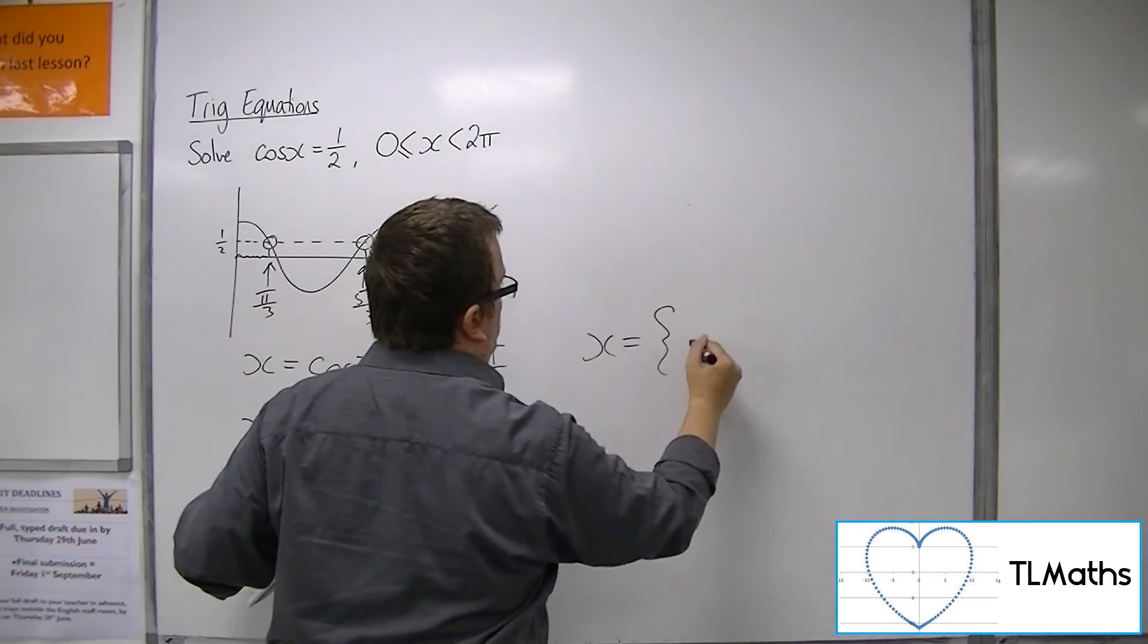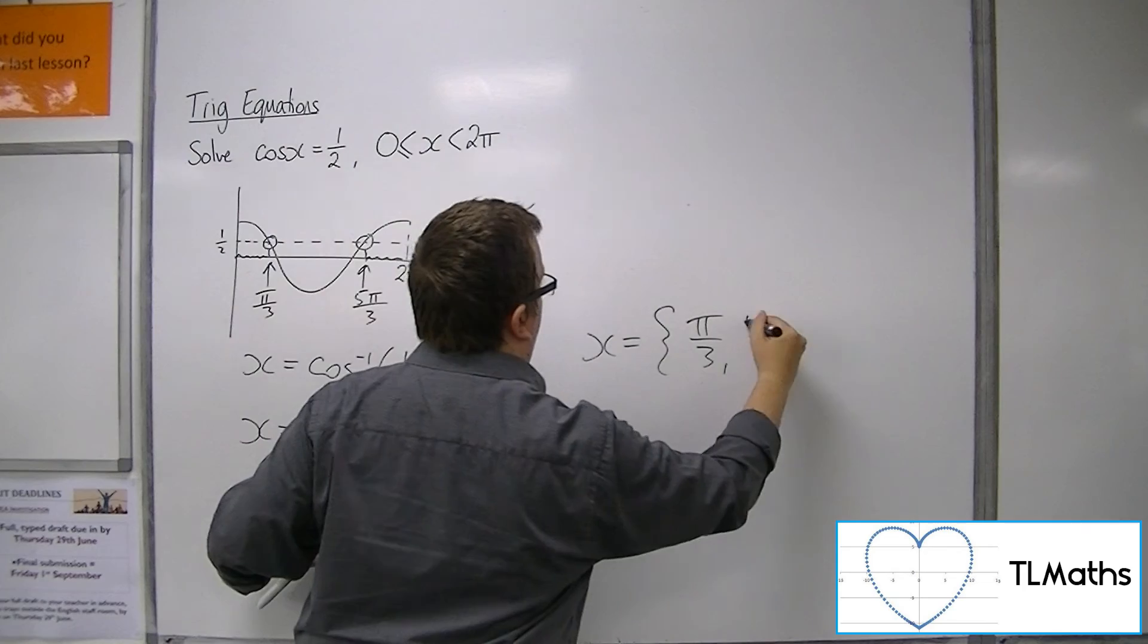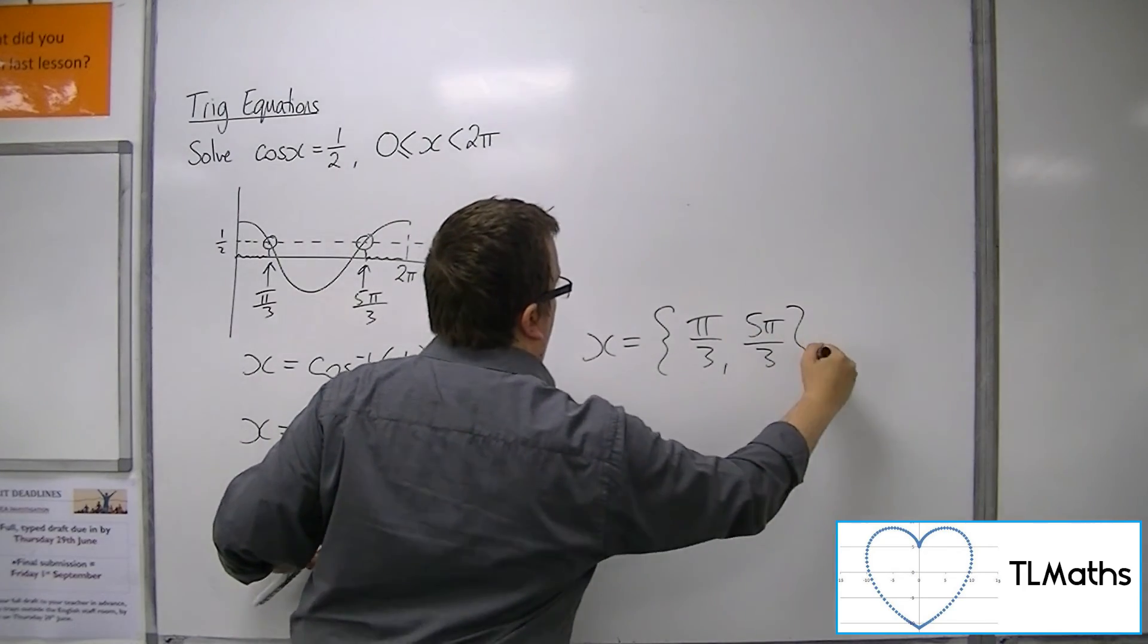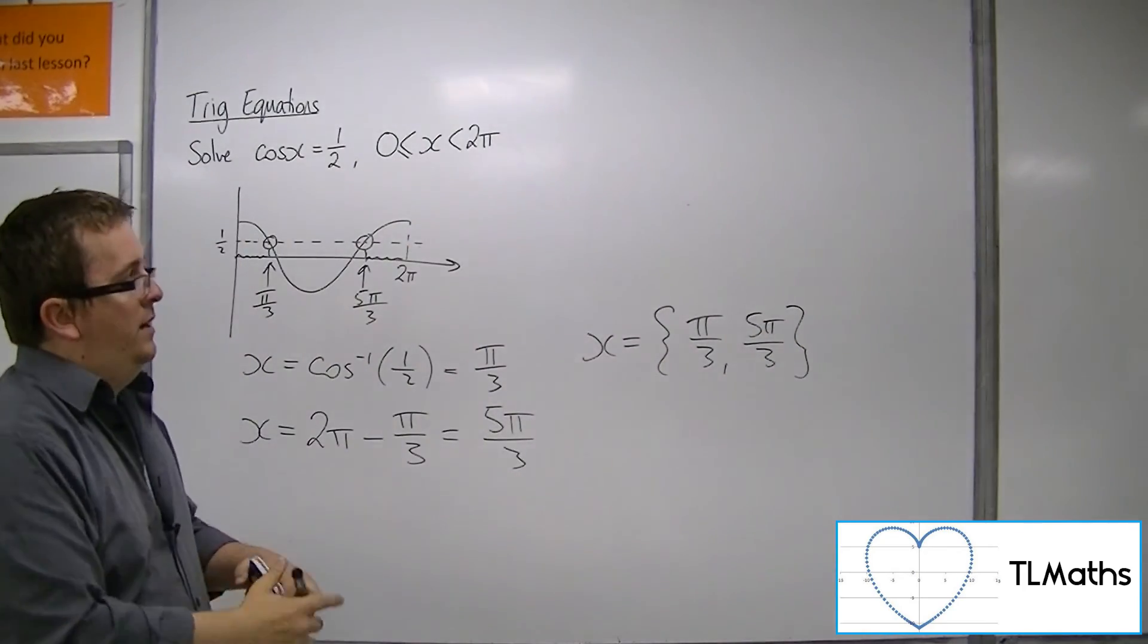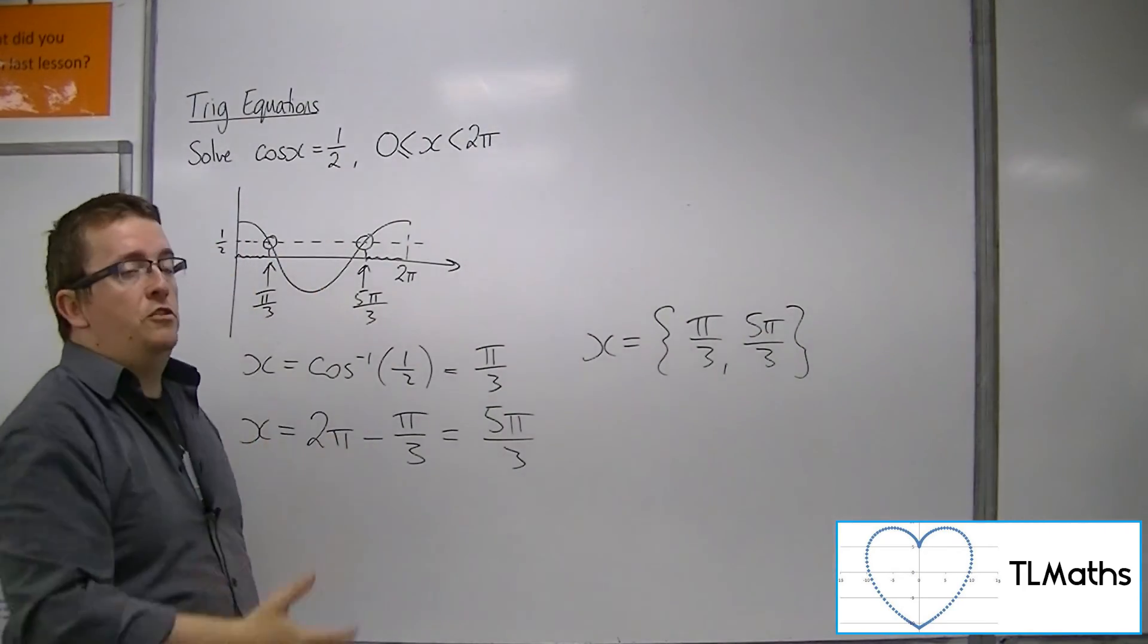So our two solutions are pi over 3 and 5 pi over 3 for solutions between 0 and 2 pi.